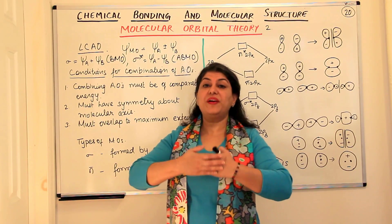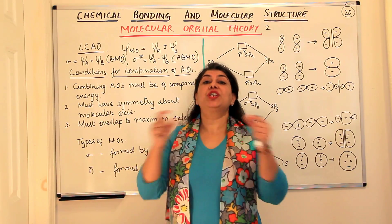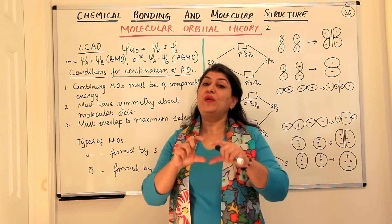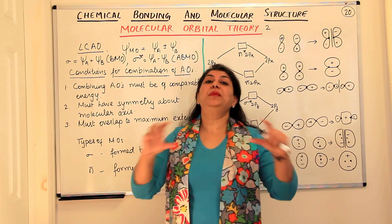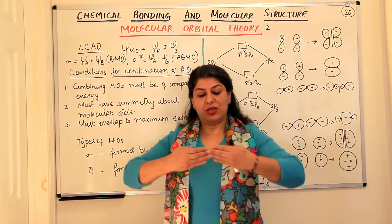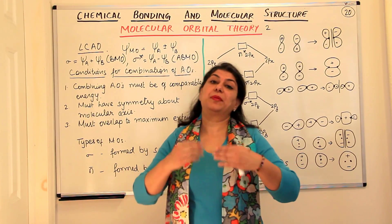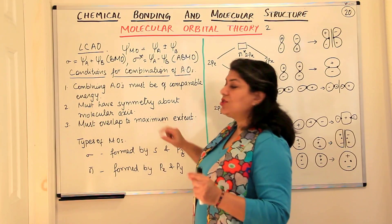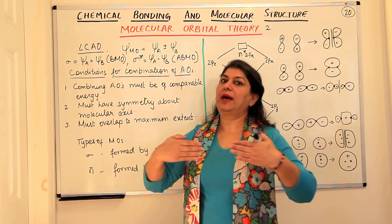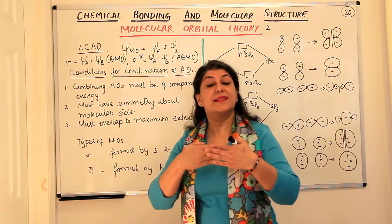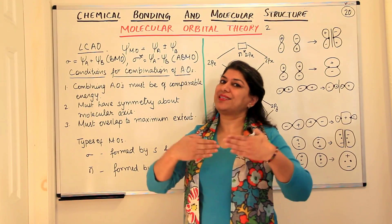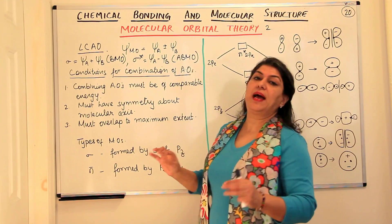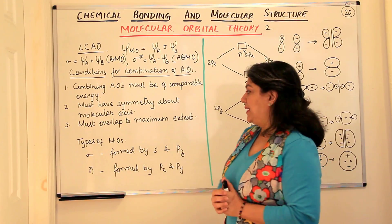And the third condition is that in order to have an effective bond, there should be maximum overlap. The greater the overlap, the more is the stability, because more is that region being shared by the two nuclei for the two electrons to be present equally. So greater the area of overlap, the stronger is the bond. Therefore, they must overlap to that maximum possible extent.